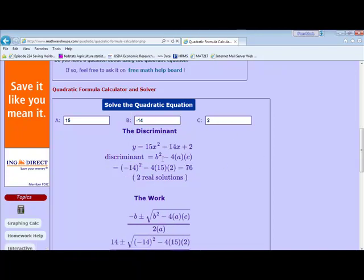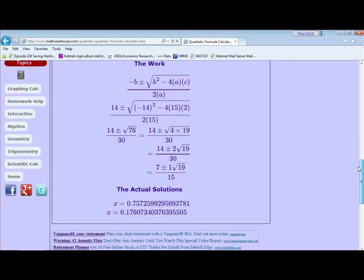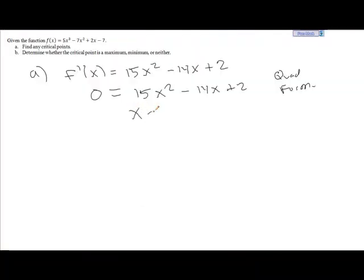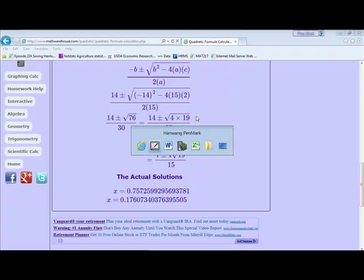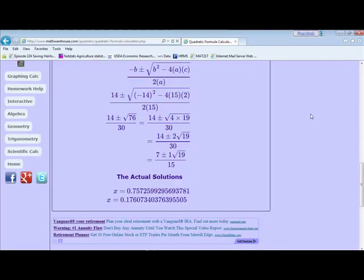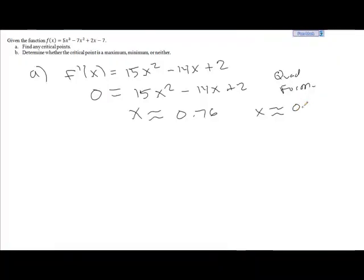And so then it replicates our equation here. Notice it gives you all the work in case you're interested in seeing how that comes about. But the bottom line is, here are the two solutions: we get about 0.76 and 0.18. So those are our two critical points.